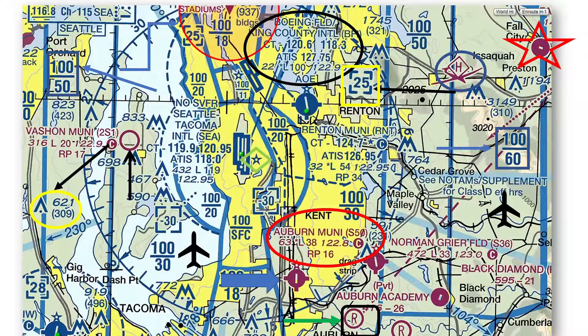See the red star in the top right corner of the chart. Is fuel available at the Falls City Airport? No fuel is available at the Falls City Airport since there are not dashes protruding from the magenta circle. Notice Auburn Municipal Airport at the bottom of the chart would have fuel available since there are dashes sticking out from the magenta circle.